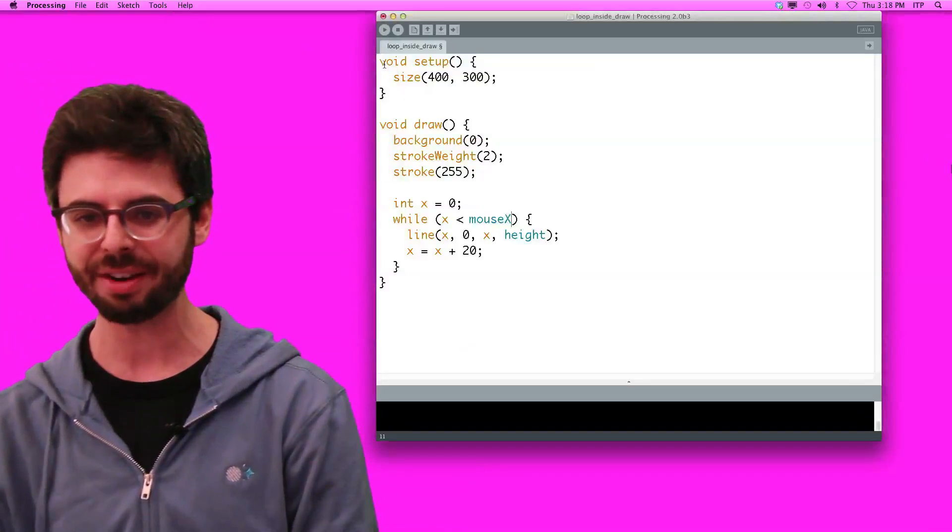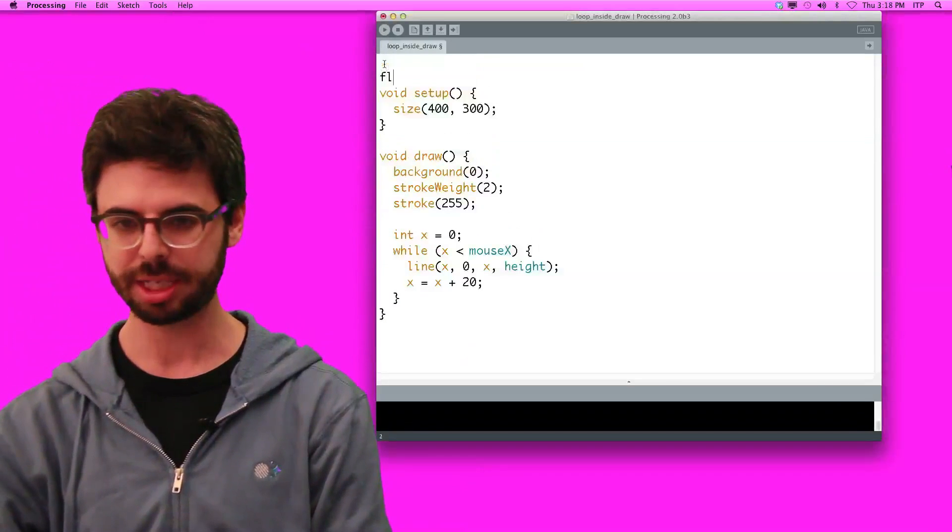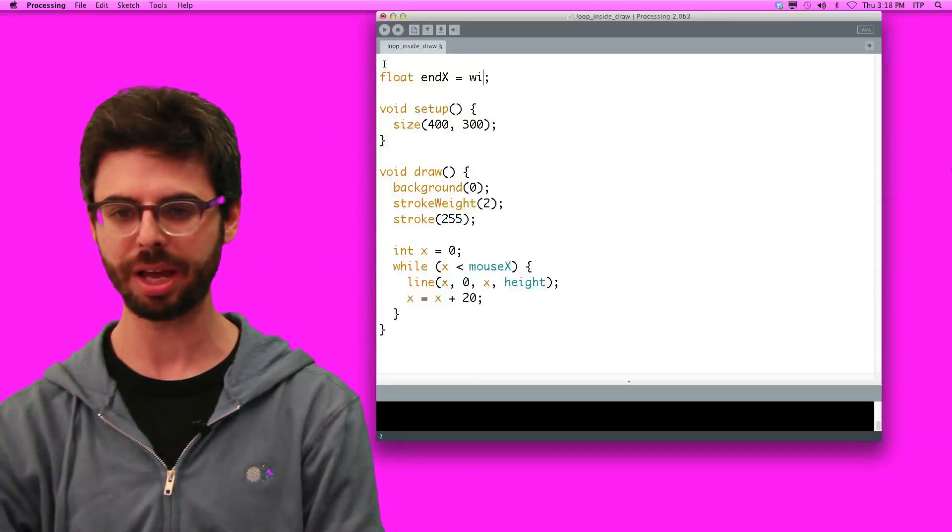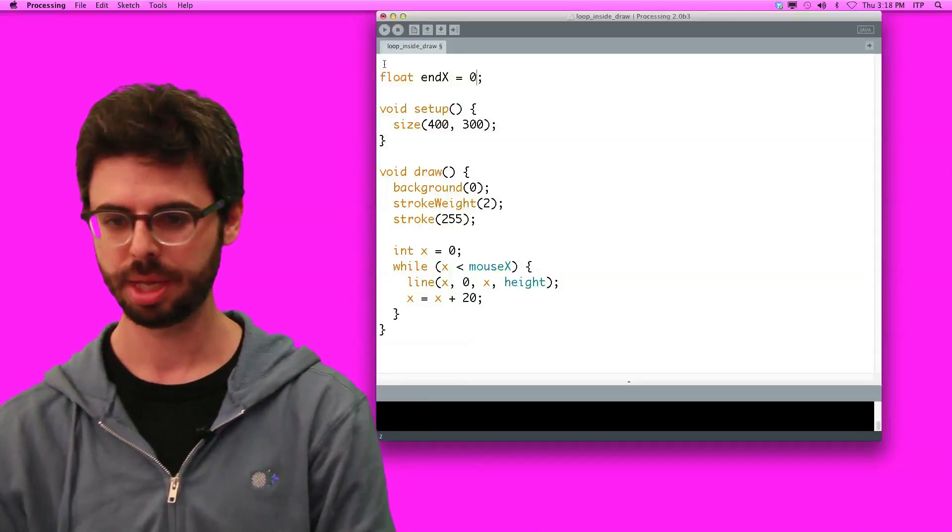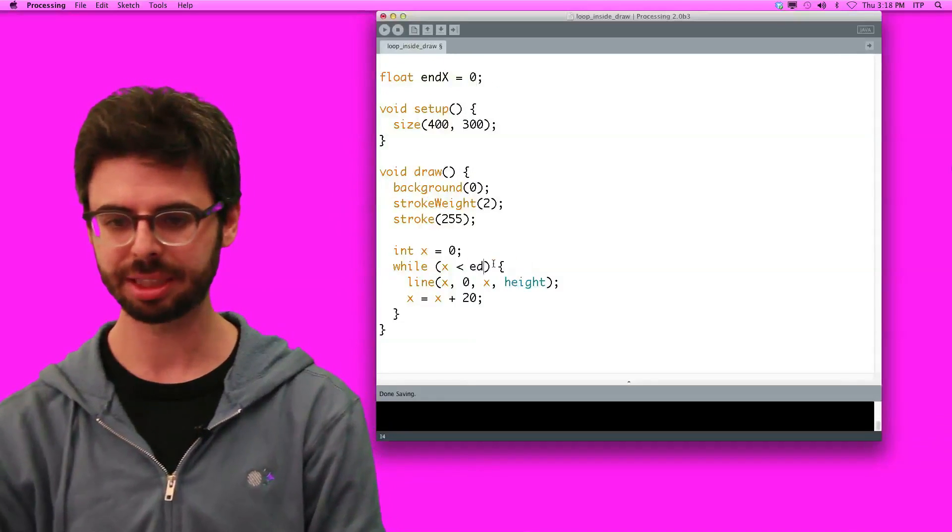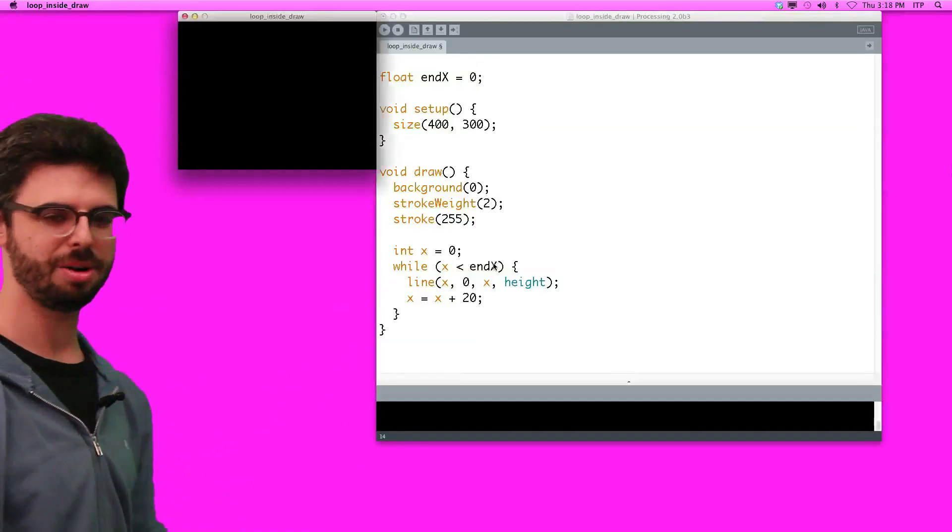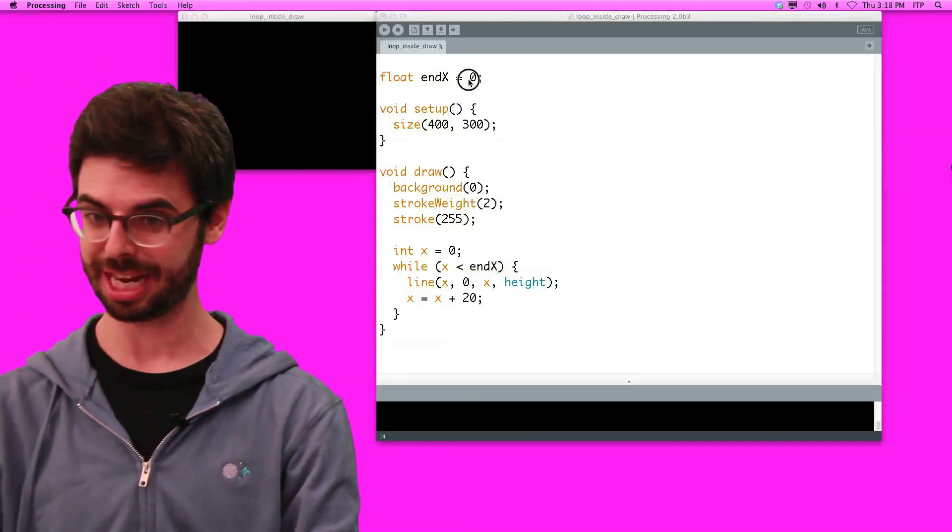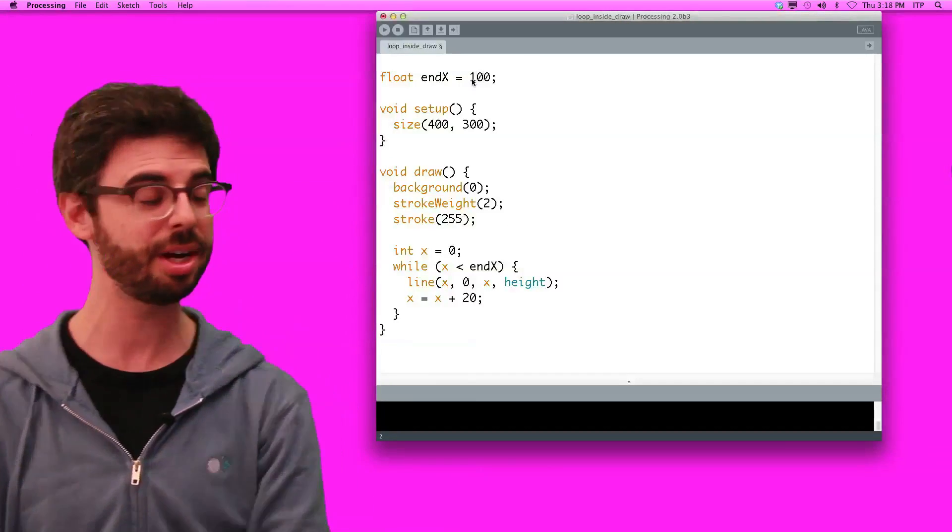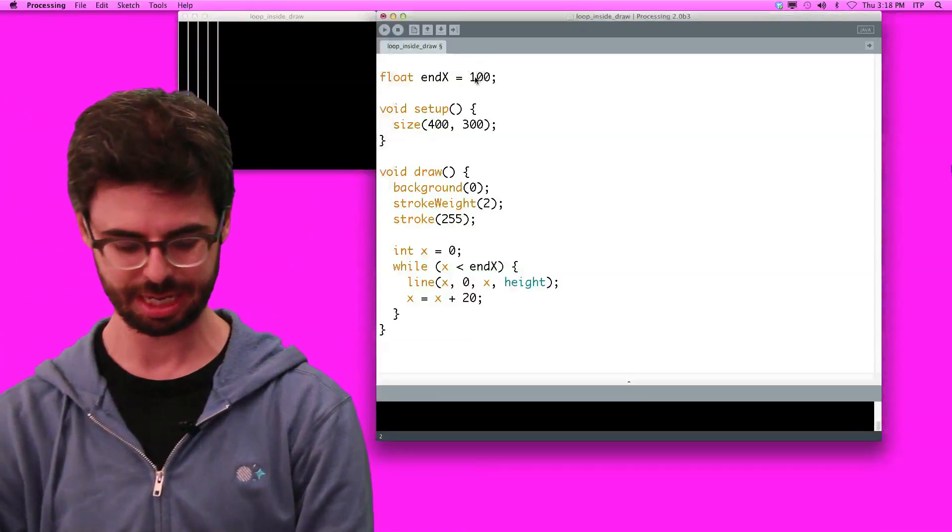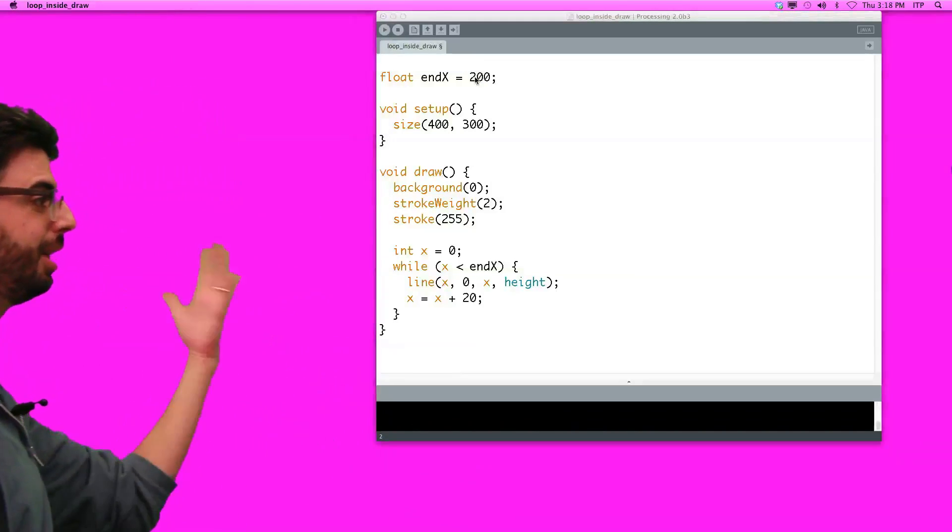So, where can I start? I could add a variable. I could call it end x, and I could say end x equals with, or equals zero, and I could put while x is less than end x, now, here we go. What if I say, okay, I get, because end x is zero, what if I say end x is a hundred? Now we have this many lines. What if I say end x is two hundred? Now we have this many lines, this should give you a clue that I don't need to keep typing in a new value.